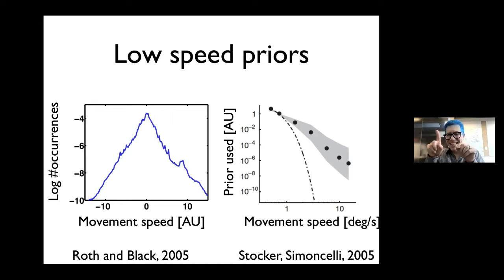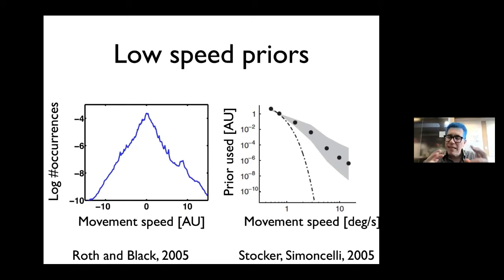You take lots of data where you ask people: is this thing faster or not? In one case it's moving a little faster, in the other it might be more blurry. If things are more blurry, it's harder to see that they move — meaning if I make things more blurry, you will think they move more slowly.